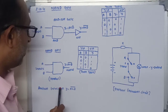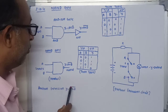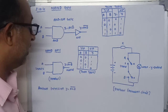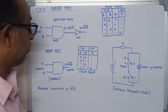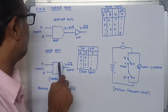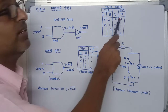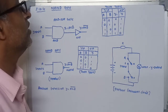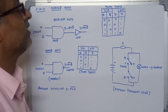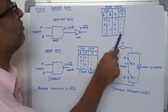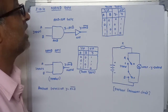The Boolean expression for this gate is Y equals A dot B bar. That means the final output of the NAND gate is an inverted output of A into B. The output of this NAND gate is high when any one of the inputs is high or both inputs are zero.